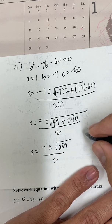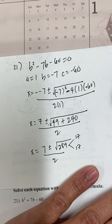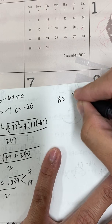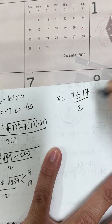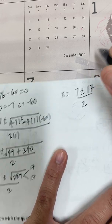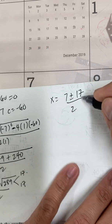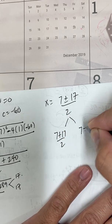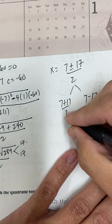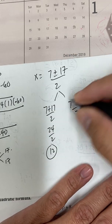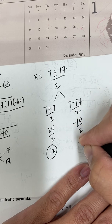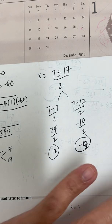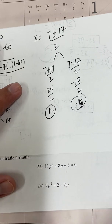The square root of 289 is 17. So x equals 7 plus or minus 17, all over 2. Note: once you simplify the square root of 289 to 17, the radical sign is gone. Split into two: 7 plus 17 over 2 gives 24 over 2, which is 12. And 7 minus 17 over 2 gives negative 10 over 2, which is negative 5. So the answers are 12 and negative 5.